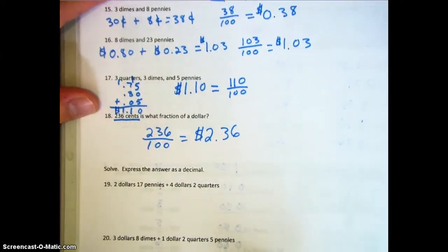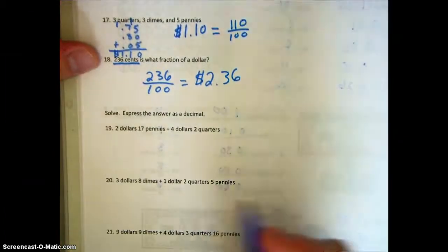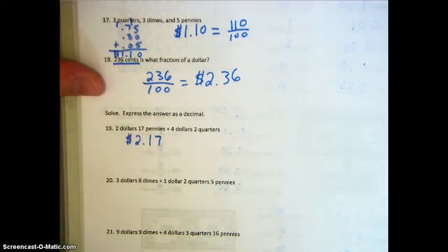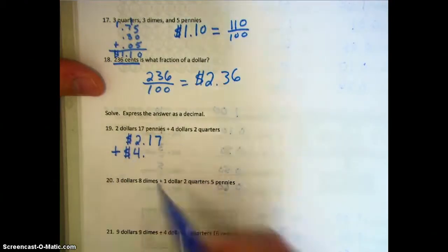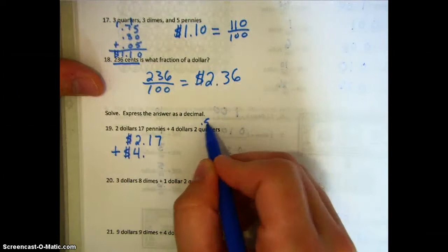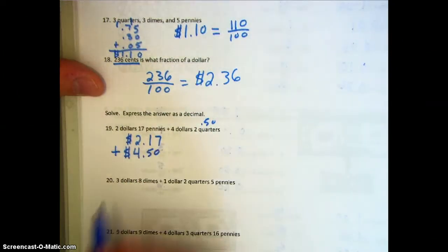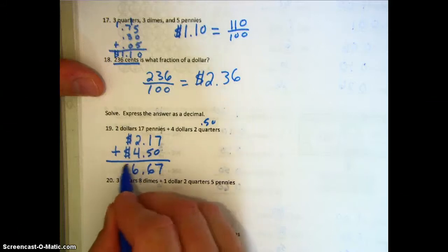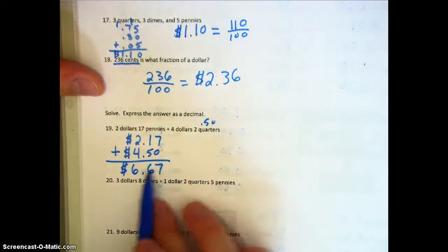Now we're going to express our answer as a decimal. We have two dollars and seventeen pennies, plus four dollars, and we know two quarters gets us fifty cents. Adding these up, we get six dollars and sixty-seven cents, expressed as a decimal.